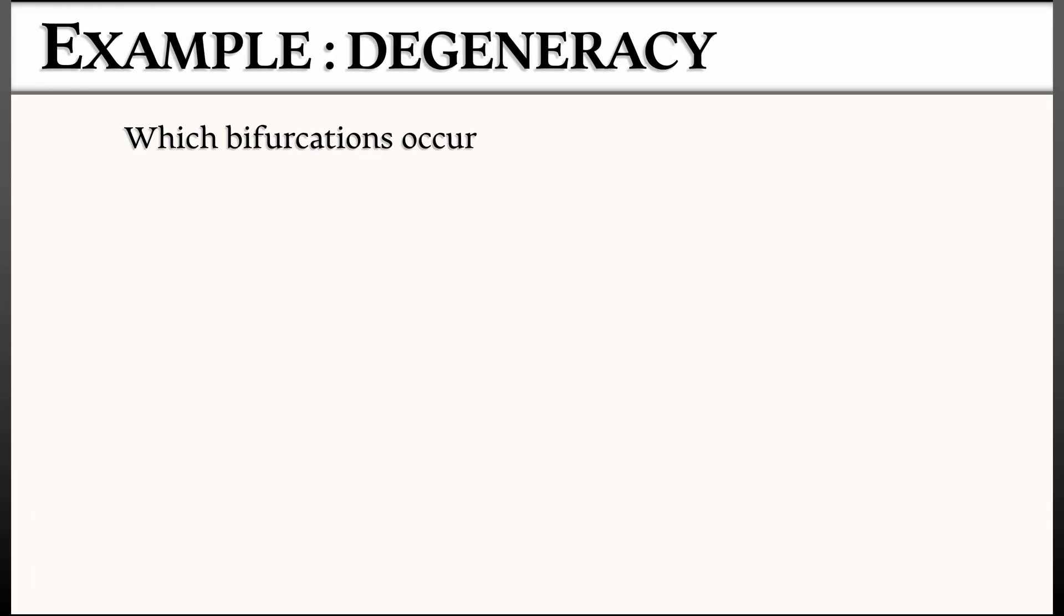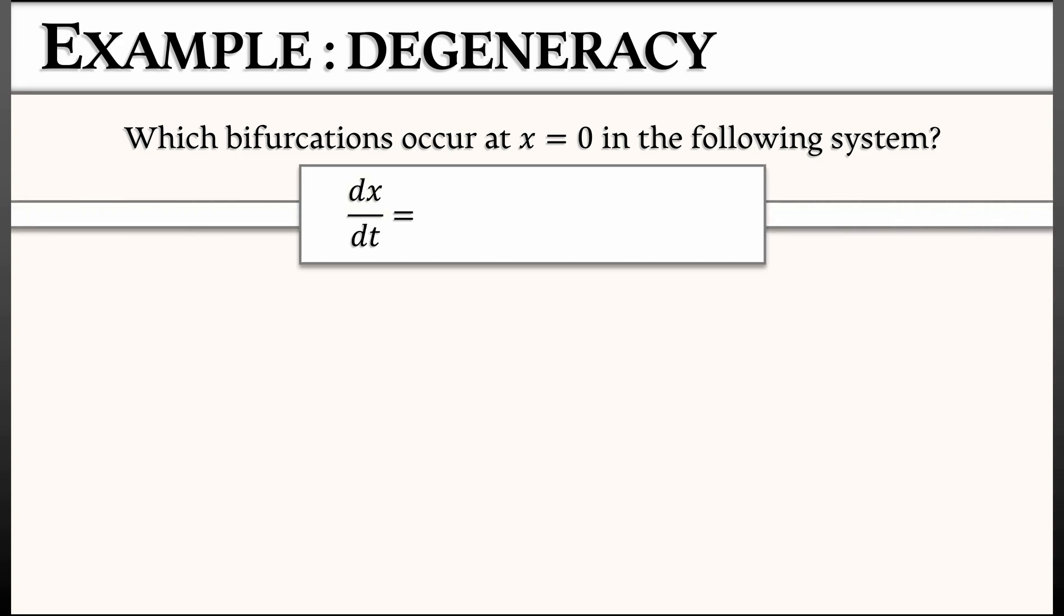Here's an example. Consider what happens at x equals zero in the following system. Continuous time, dx/dt equals μ²x - μx² - μx³ + x⁴. Now what happens to this guy? Well, it kind of looks like a transcritical. You've got that constant times x minus constant times x² out in the front.